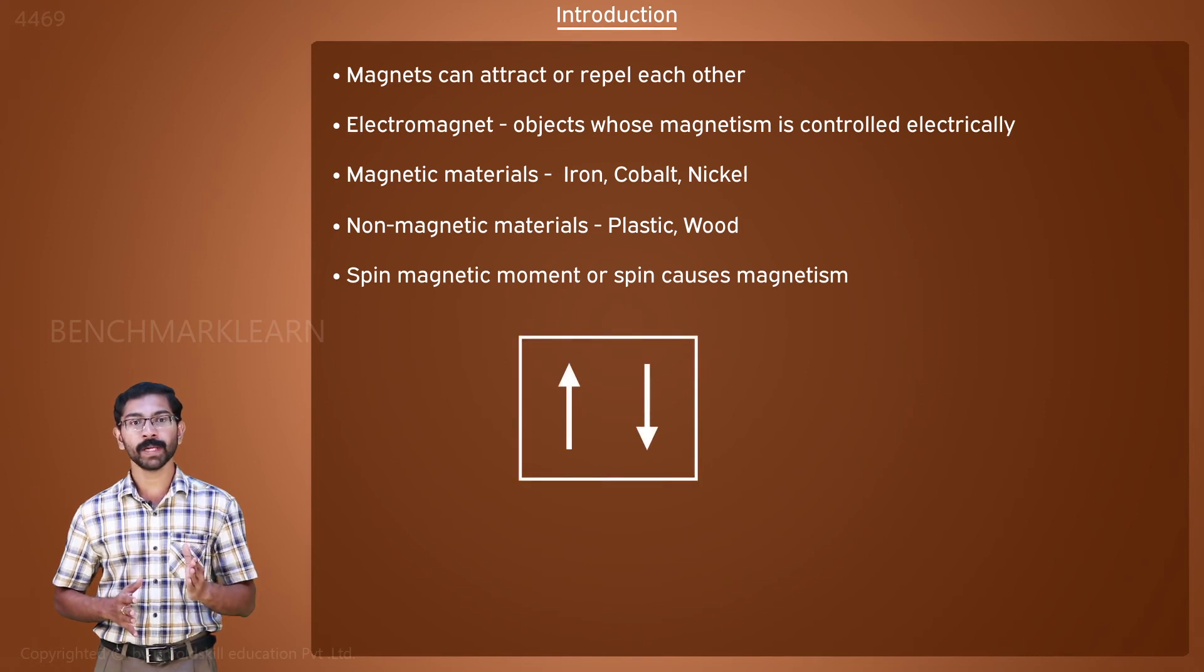Electrons have a spin of either positive half or negative half. If the net spin of electrons in an atom is zero, it is non-magnetic. Otherwise, the atom has a net magnetism.